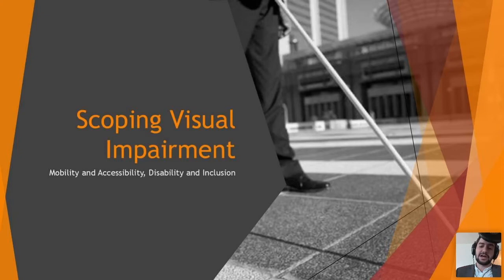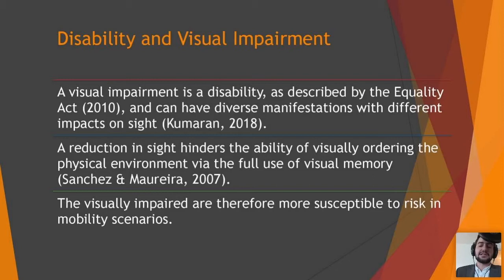So what is visual impairment? It's a disability with a long-term impact on one's ability to carry out activities of daily living. It causes a reduction in sight which hinders the person's ability to use both their sight and their visual memory — so identifying environmental cues like shop fronts and signage. As an inevitable result, visually impaired people are just more susceptible to hazard when carrying out mobility activities.